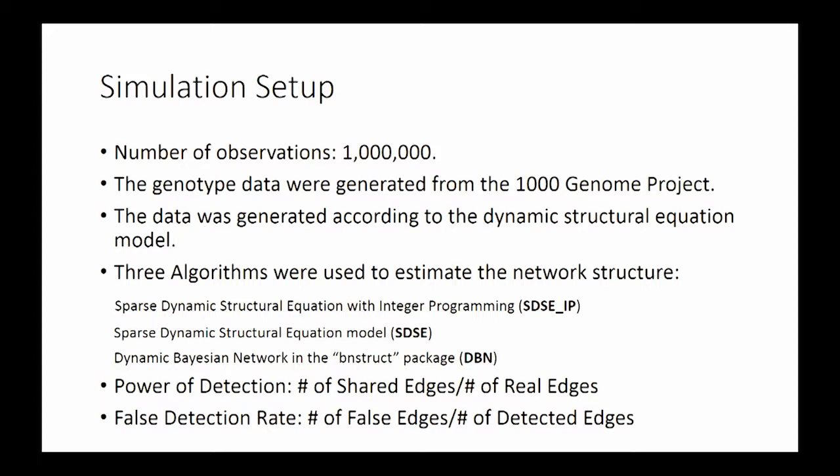To evaluate the performance of the model, we use two different parameters. One is the power of detection, that means the number of detected edges divided by the number of real edges. The other one is the false detection rate, that means the number of false edges divided by the number of edges we calculated.